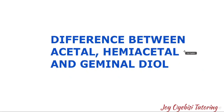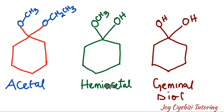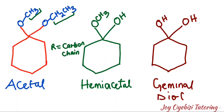Hello and welcome to my channel. In this video I'm going to be explaining the difference between acetal, hemiacetal, and geminal diol. When I say OR, R means carbon chain — any number of carbon chain.